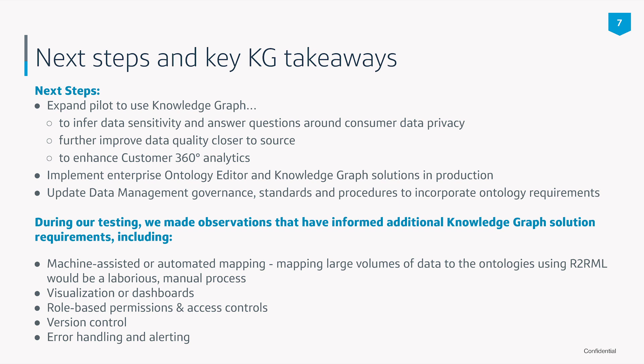Our immediate next steps really build on the successes of the pilot. Work is already underway to integrate our data catalog with the ontology, knowledge graph, and our classification tools. We are also using those tools to help infer data sensitivity, as well as information around consumer consent, which is a pretty hot topic. We are looking to make our ontology infrastructure more official with the move to production. From a data management and data governance perspective, we are incorporating ontology requirements into our enterprise data management standards — including registering ontologies in support of our federated approach to curation and development, incorporating data quality rules into the ontology or knowledge graph, and including data criticality or derived data.